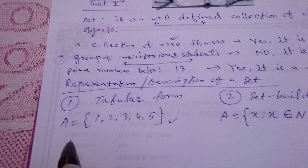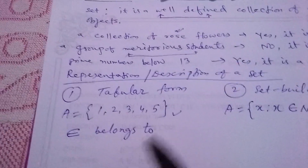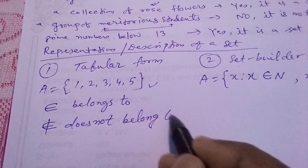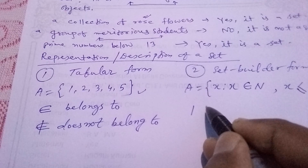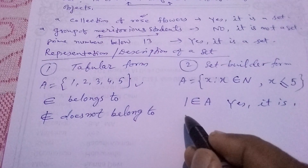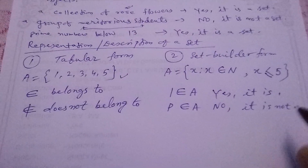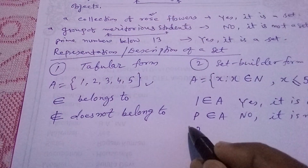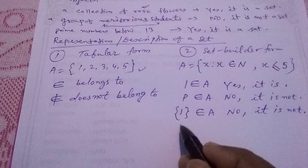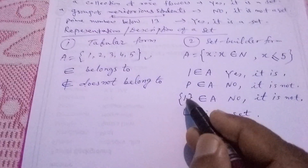Next, the symbol '∈' means 'belongs to' and '∉' means 'does not belong to'. For example, 1 ∈ A — yes, it is. But p ∈ A — no, it is not. Also, {1} ∈ A — no, it is not, because any element written in curly brackets becomes a set, not a plain element.